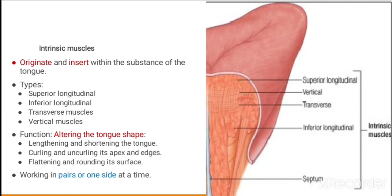Intrinsic muscles originate and insert within the substance of the tongue. These are the superior longitudinal, inferior longitudinal, transverse, and vertical muscles. They change the shape of the tongue — lengthening, shortening, curling and uncurling the apex and edges, and flattening and rounding its surface. They work in pairs on one side at a time.